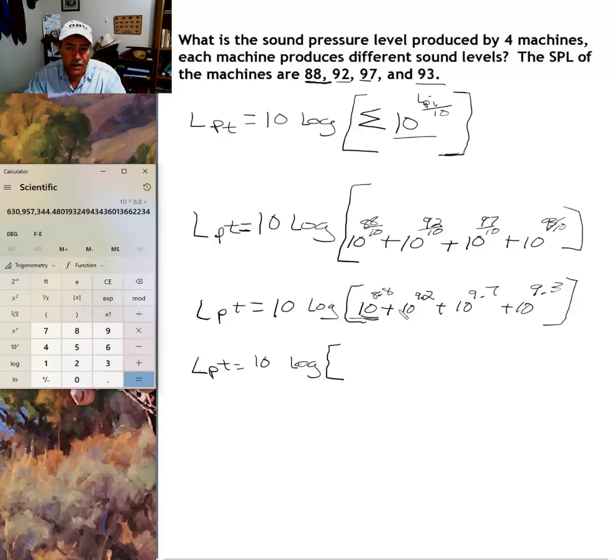Now we want to add the next term: 10 to the 9.2, plus 10 to the 9.7, plus 10 to the 9.3. And like I said, we end up with a really big number: nine billion two hundred twenty two million.